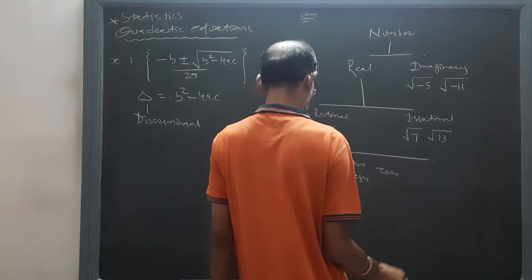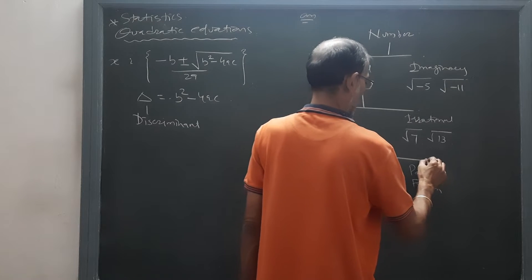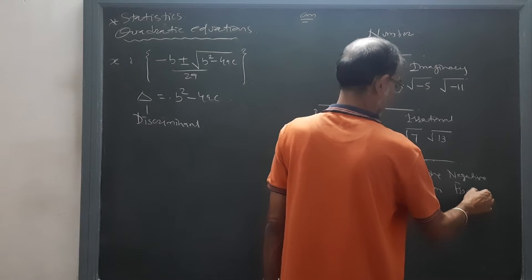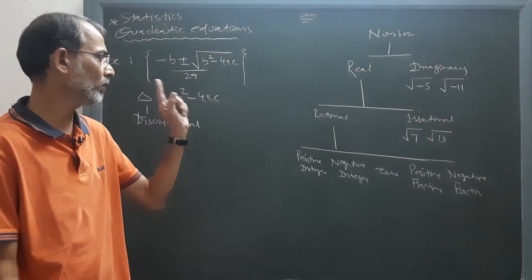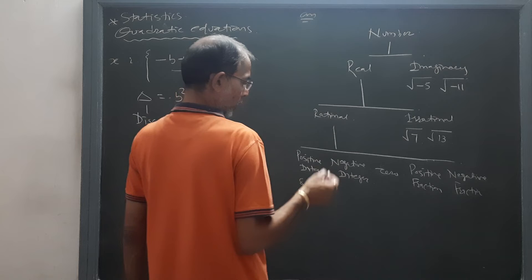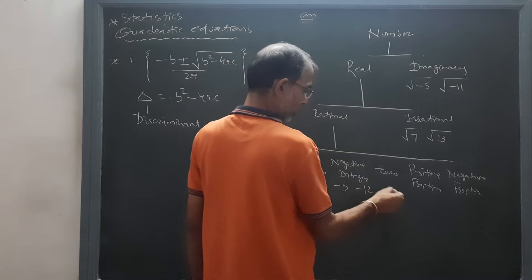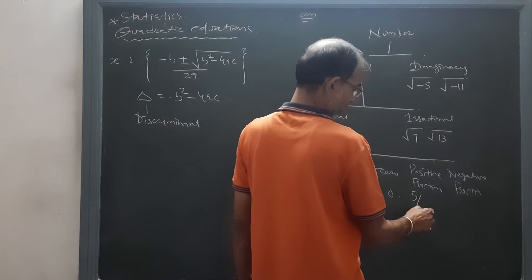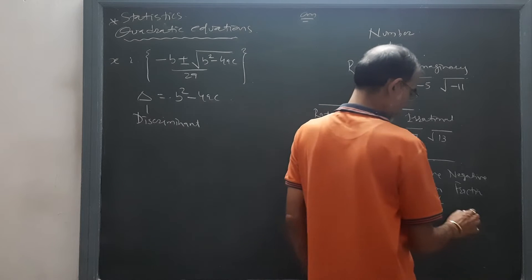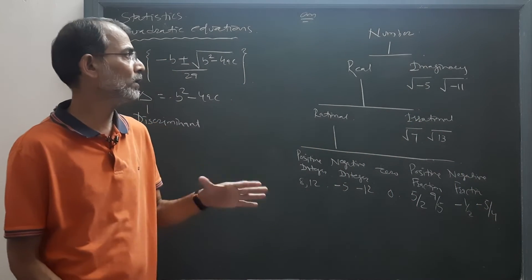In rational numbers there are five types: positive integer, negative integer, zero, positive fraction, and negative fraction. Positive integer means 8, 12; negative integers means minus 5, minus 12; zero we know; positive fractions means 5 by 2, 9 by 5; negative fractions means minus 1 by 2, minus 5 by 4.